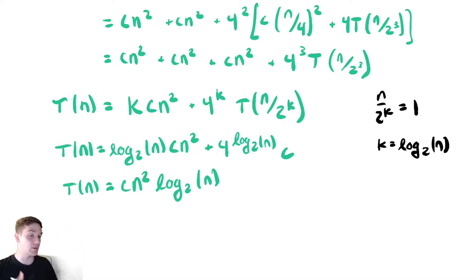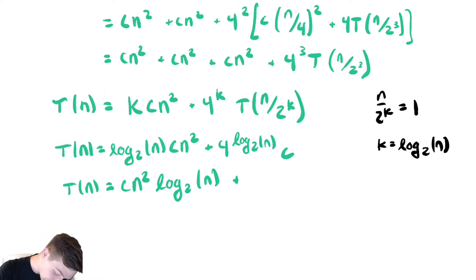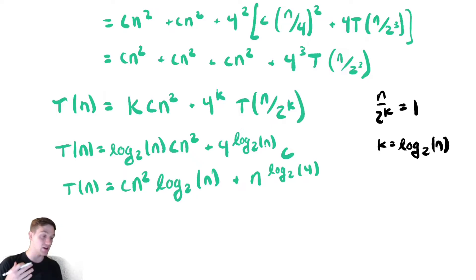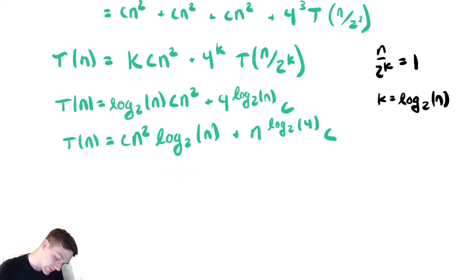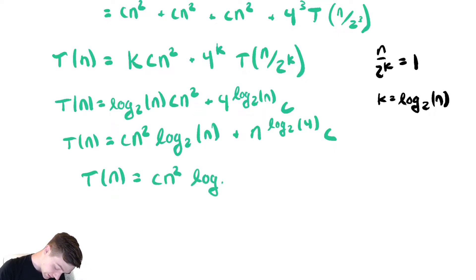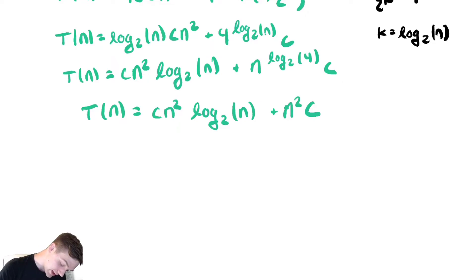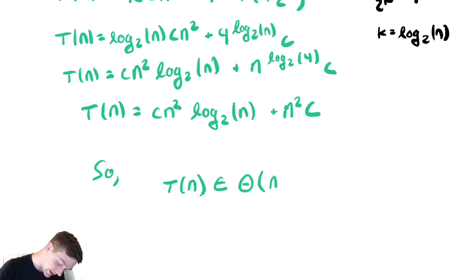There's a nice algebra property we can apply to the second term: 4 to the log base 2 of n equals n to the log base 2 of 4. We can swap the base of the exponential and the argument of the log and they are equivalent. So we still have that c, giving us n to the log base 2 of 4, which is just n squared times c. Therefore T(n) equals cn squared log base 2 of n plus cn squared, meaning this recursive function is in Θ(n² log n).